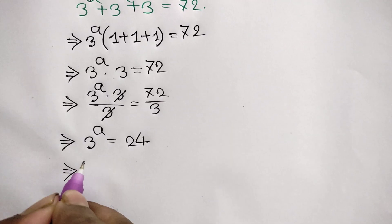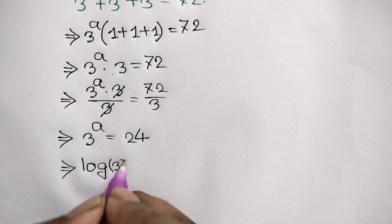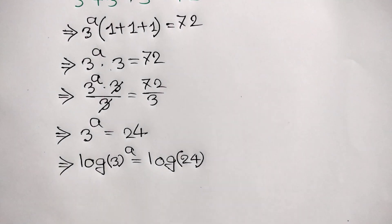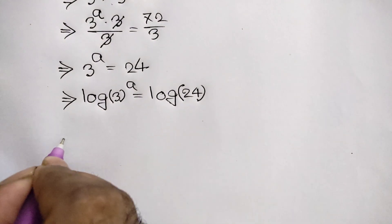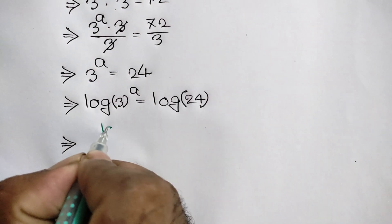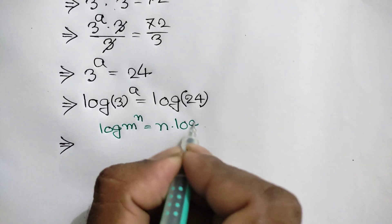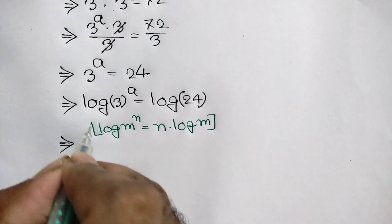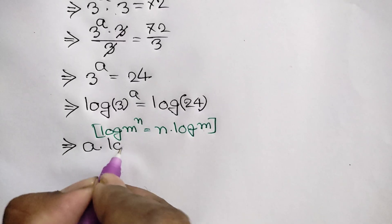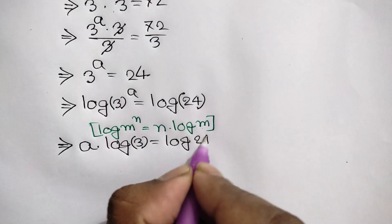Now taking log on both sides, we can write log of 3 to the power a is equal to log of 24. We know a logarithm formula: log of m to the power n is equal to n times log of m.